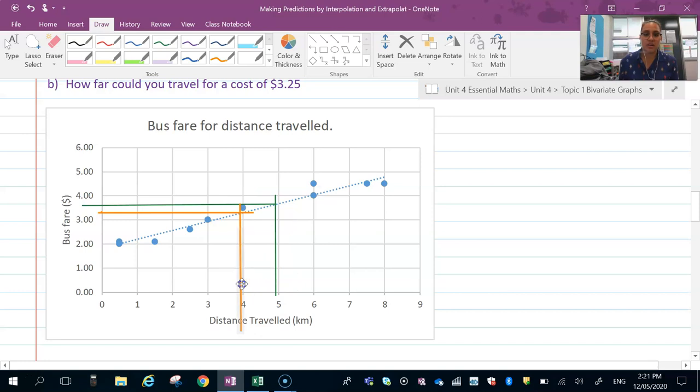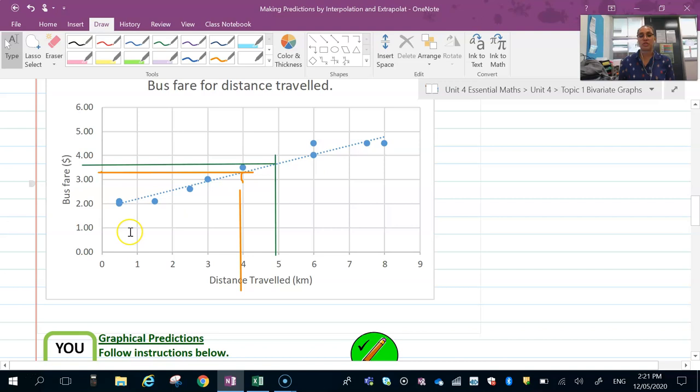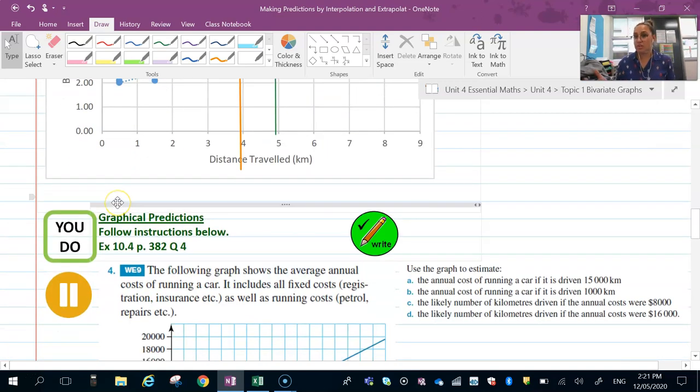You can see that it is on the four here. A $3.25 ride is going to probably get you about four kilometers. So that's how we do graphical interpretations using your line of best fit or interpolations.